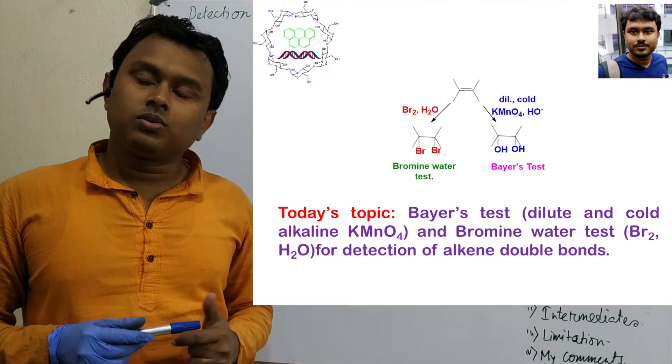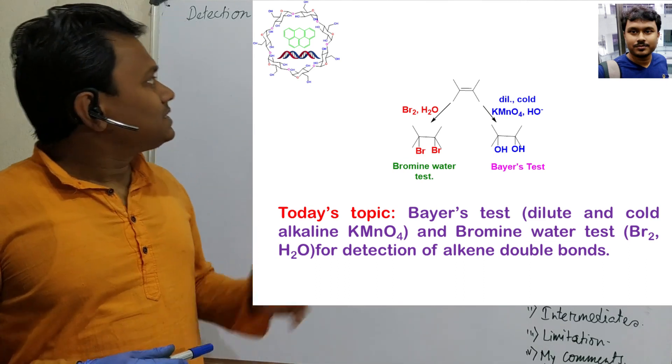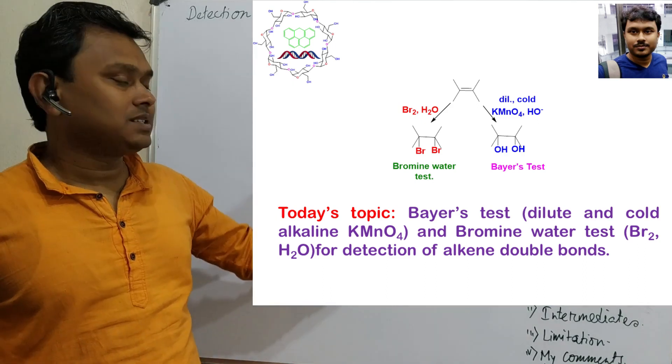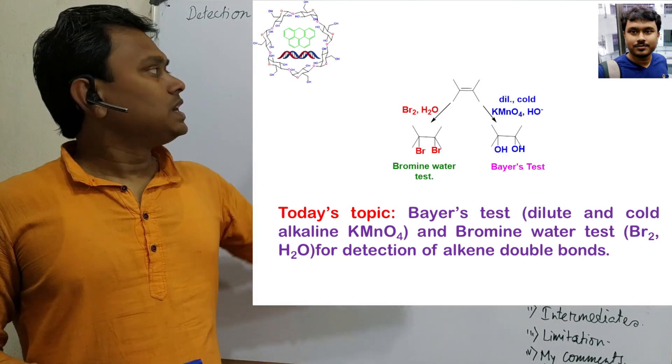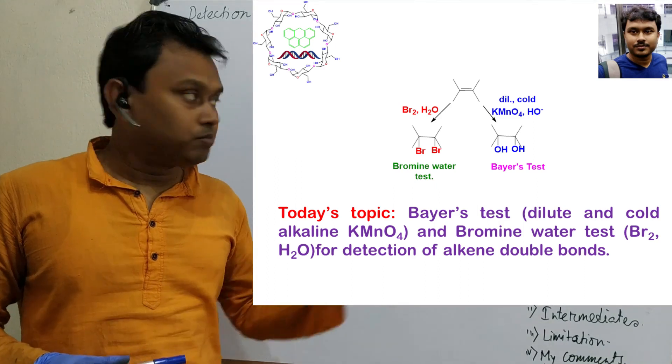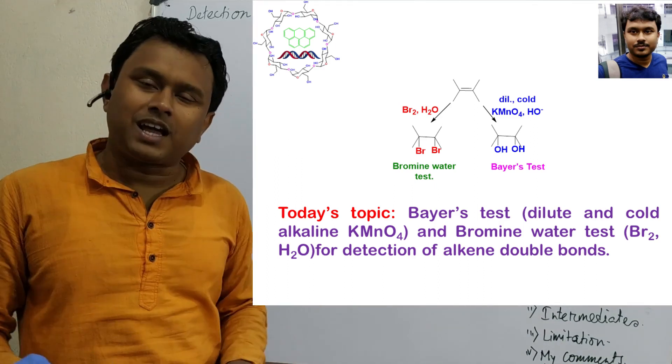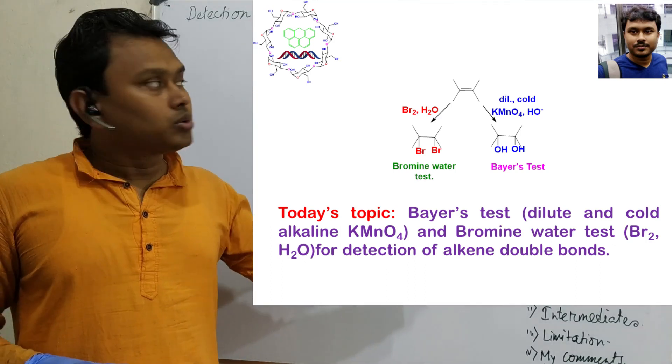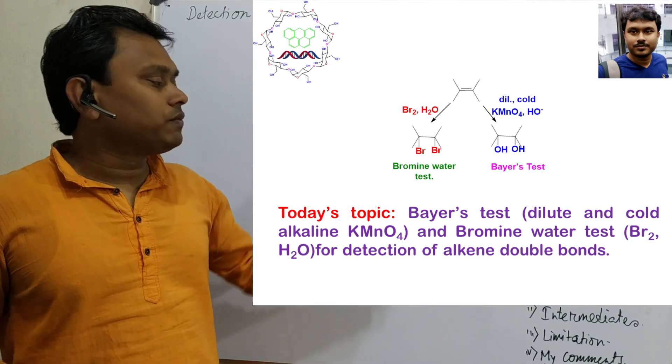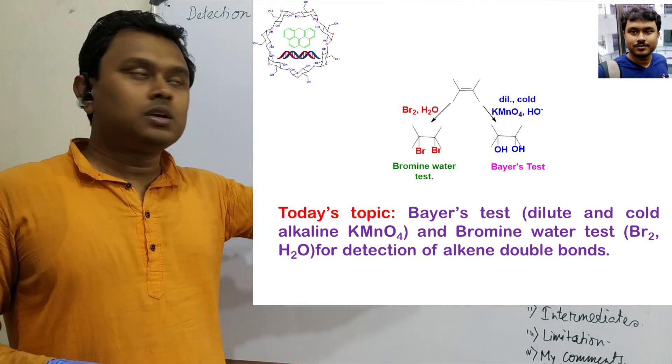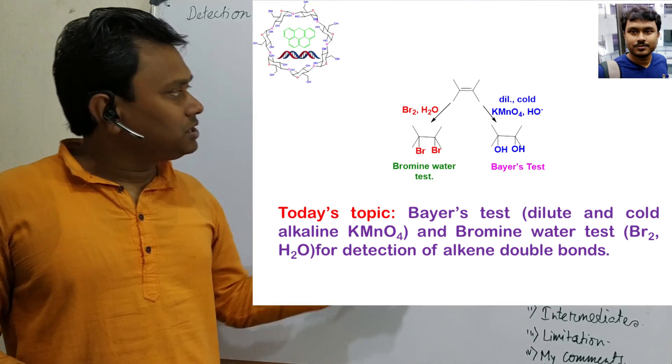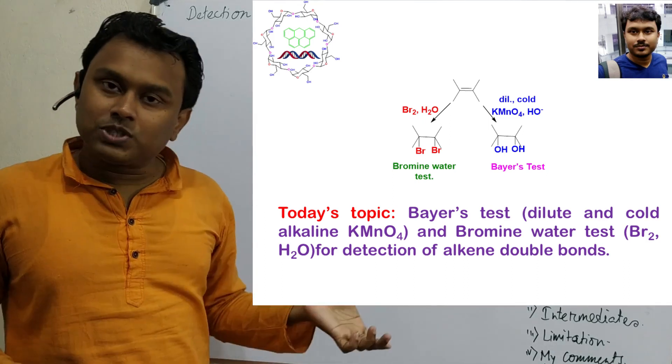Today we will discuss detection tests. Today's topic is detection of C=C double bond by two tests: one is Baeyer's test, which means cold dilute alkaline KMnO4, and second is bromine water test. Both are similar types, but there are some differences. We will discuss these two. Today's discussion will cover the basic idea, reagents, intermediates, and limitations of this process.